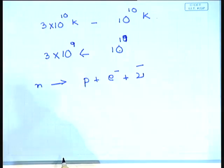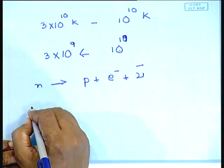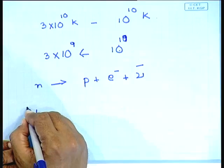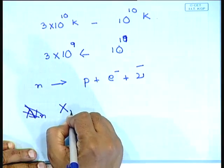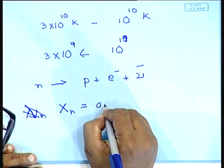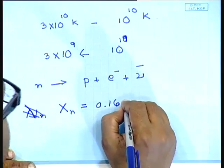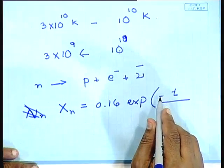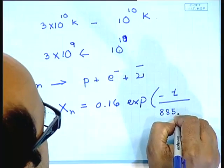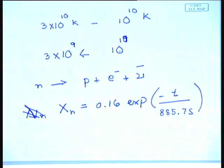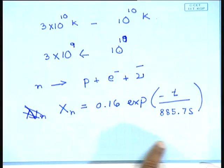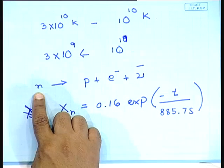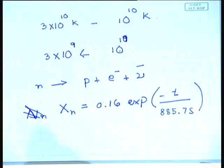The free neutron is essentially unstable and has a lifetime of 885 seconds. So the neutron fraction goes as 0.16 × exp(-t/885). To a great accuracy you can model the neutron fraction this way, since the free neutron is unstable to beta decay and the neutron fraction falls off like this.